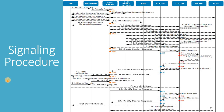This figure shows the attach procedure initiated by a UE. All the signaling messages exchanged between different network elements like E-NodeB, MME, SGW, PGW, PCRF, IR, and HSS have been mentioned to understand the overall attach procedure.